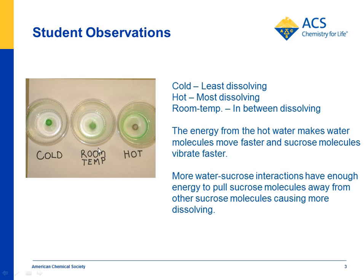That's mostly because there's a larger difference in temperature between room temp and hot. The hot water might be as much as 70 degrees centigrade. Room temperature water is about 20 degrees, so that's a 50-degree difference. But cold water, if you use ice water, will be near 5 degrees — so between 5 and 20 is only a 15-degree difference, versus a 50-degree difference between 20 and 70.